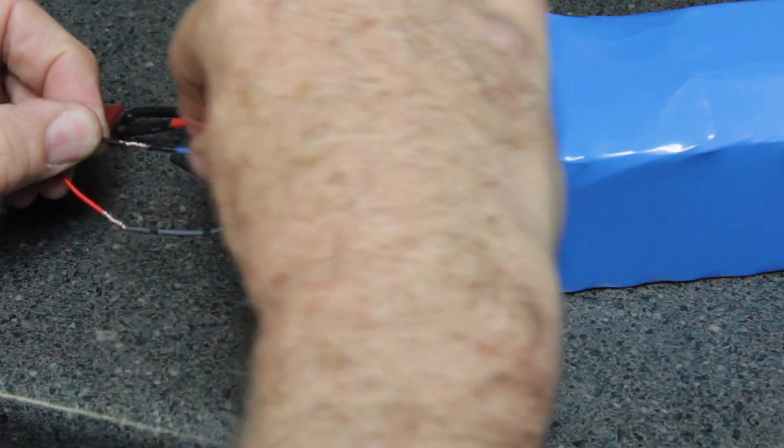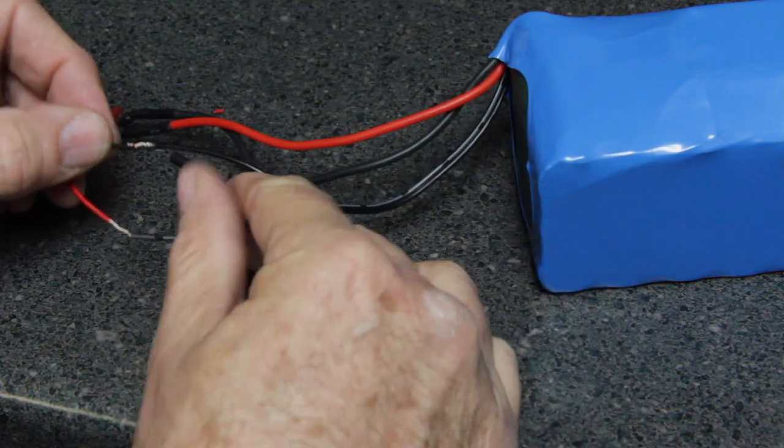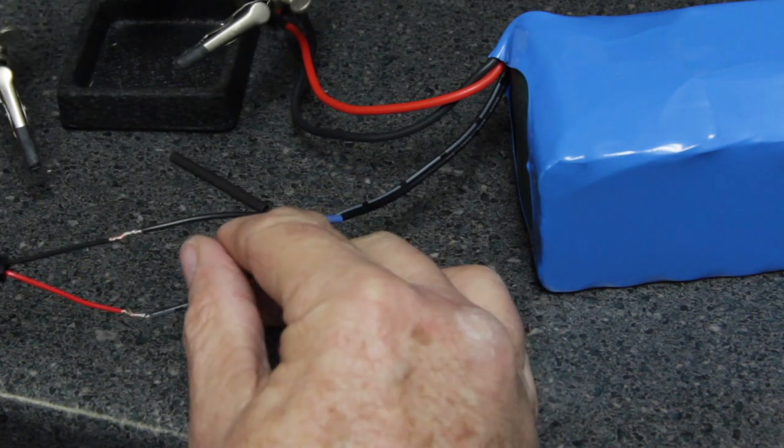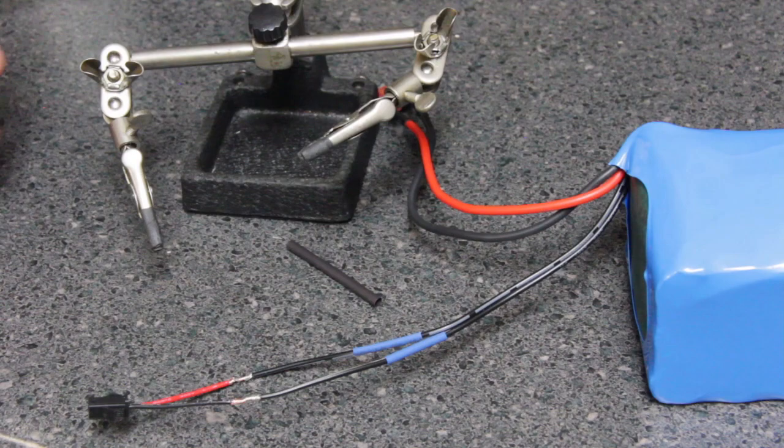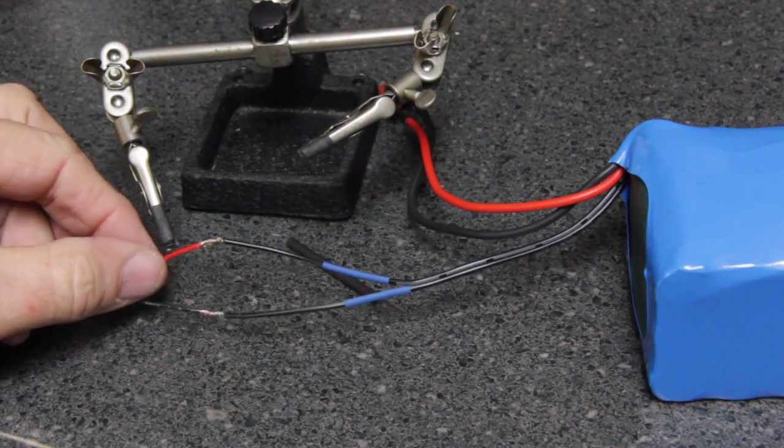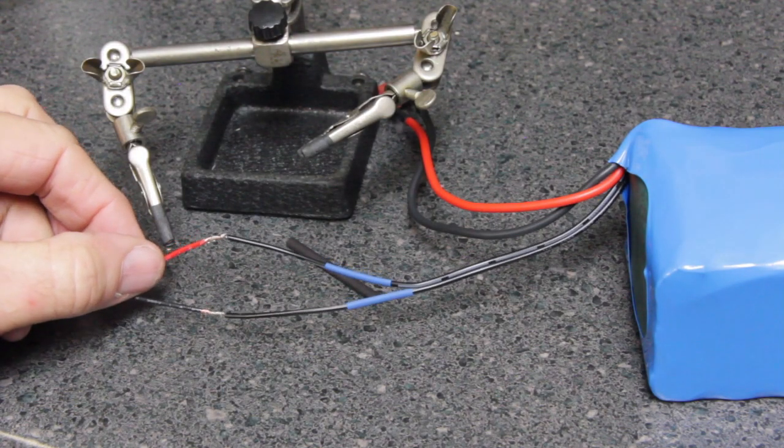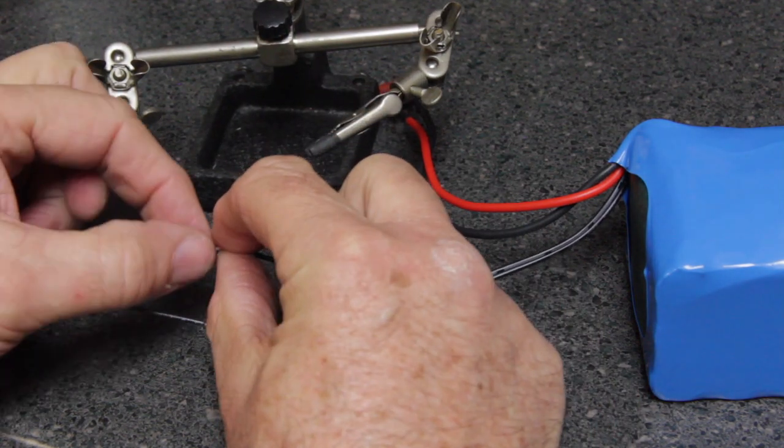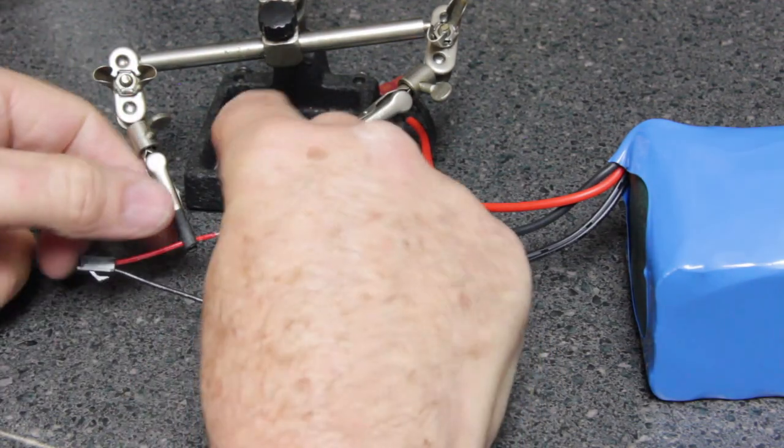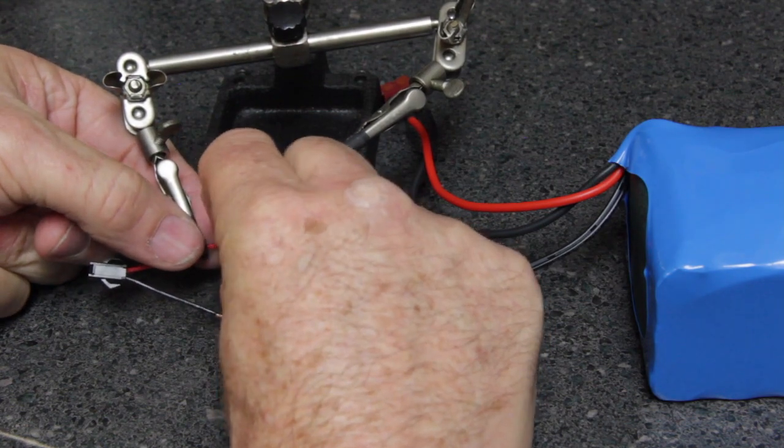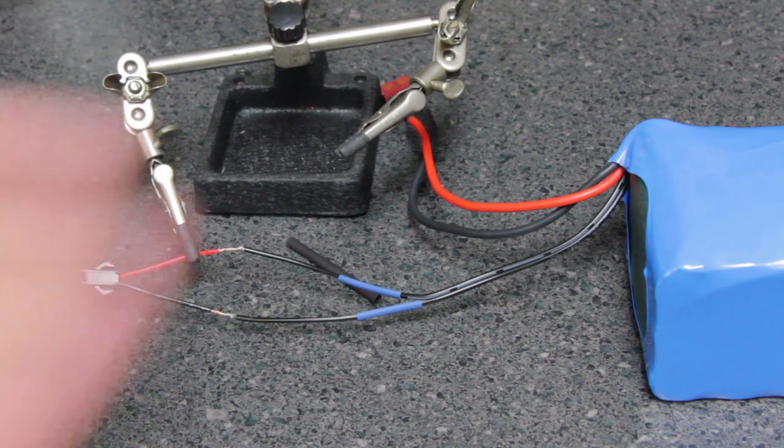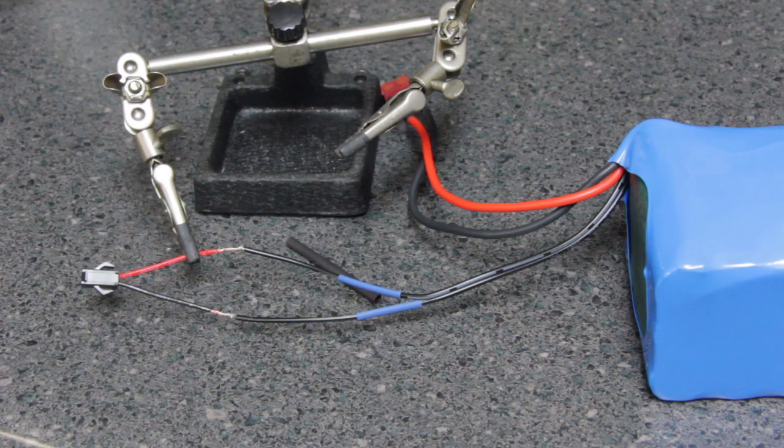Now I have something which is called a third hand. You don't need one, but it does make wire soldering easier. They're very inexpensive—you can purchase them on Amazon, or you can just get yourself some alligator clips and make your own. What I do is I hold the wire that I'm going to solder in the third hand, and that way the wire won't jiggle on me or move around.